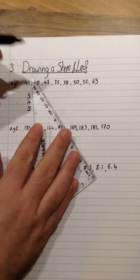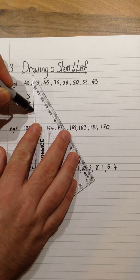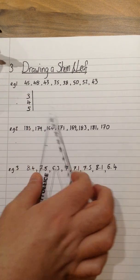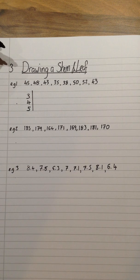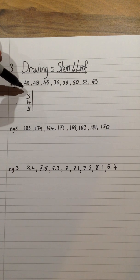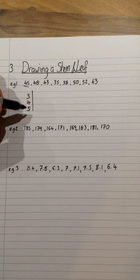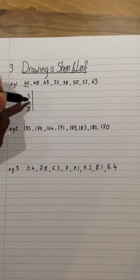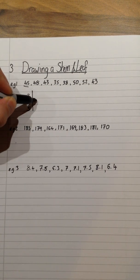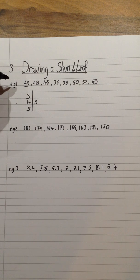We then make sure we use a ruler and we draw a little line. In order to then start filling in the stem and leaf diagram, we take one number at a time and put it onto the diagram. The first number is 45. That is in the 40s row. So on the 40s row, because I've already got the 4 there, I then put a 5.